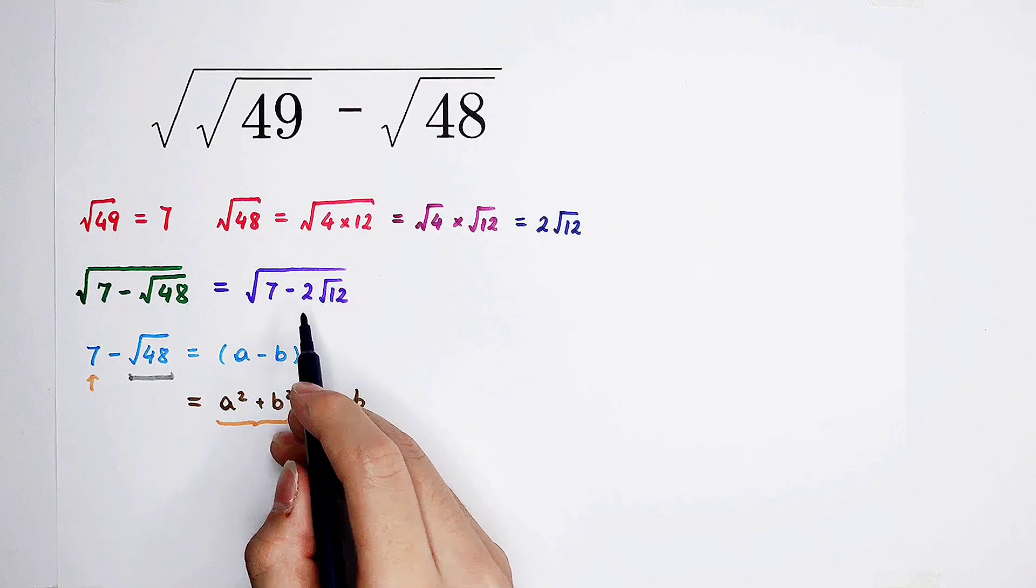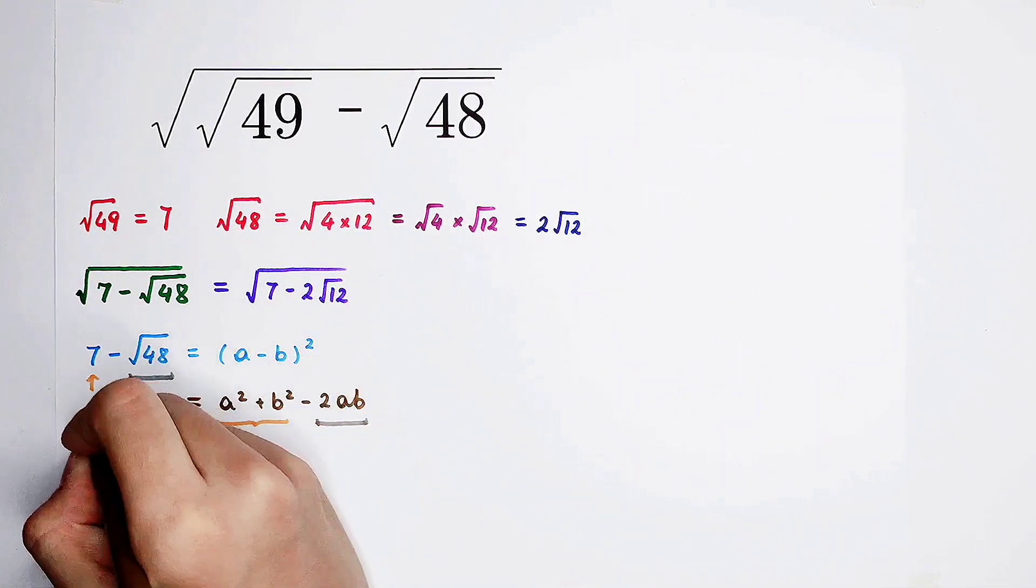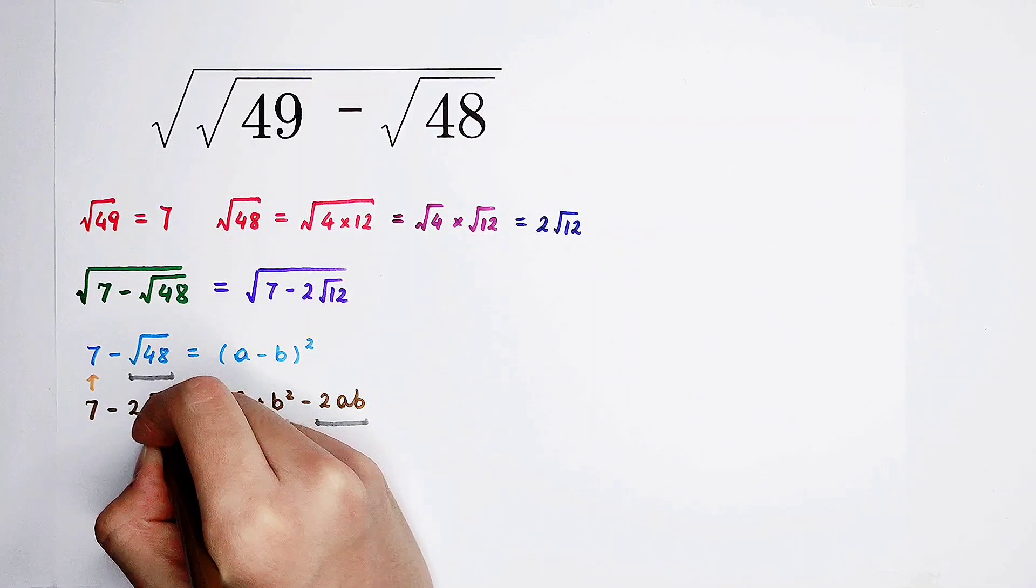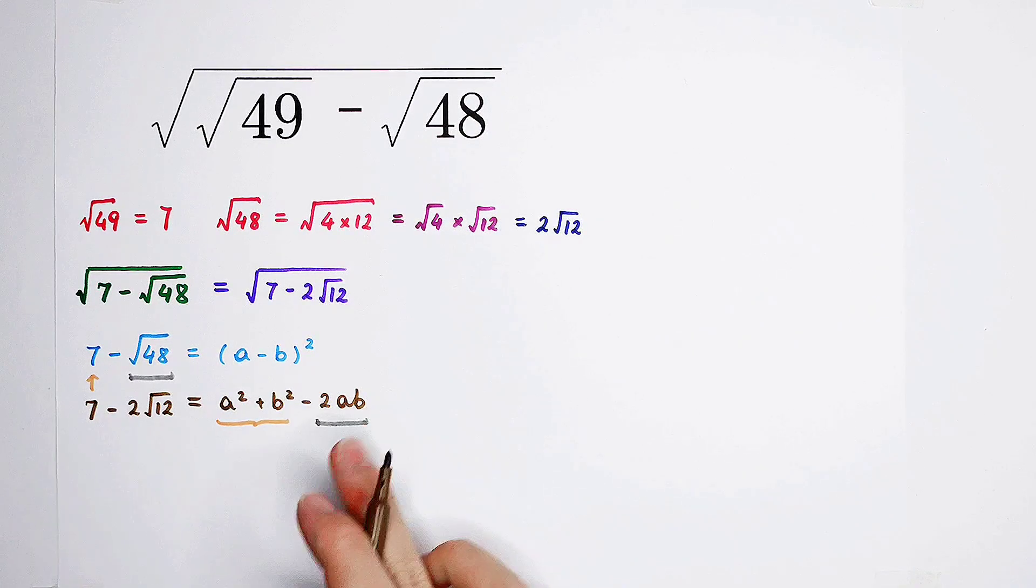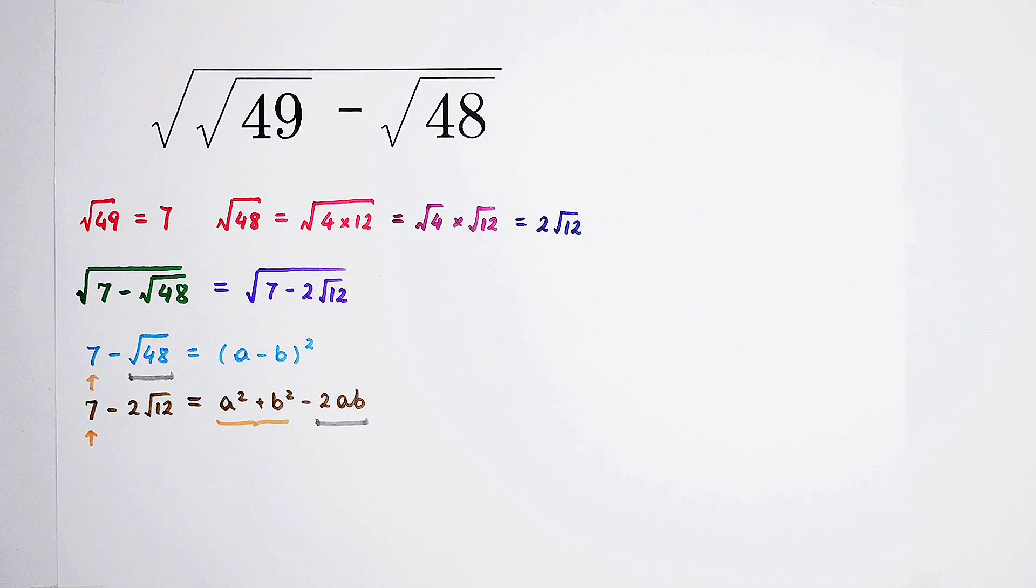So it can be written as square root of 7 minus 2 times square root of 12. Then, here appears a 2. So that means, 7 minus 2√12 should be equal to this. So a² plus b² should be 7, and a times b should be √12.